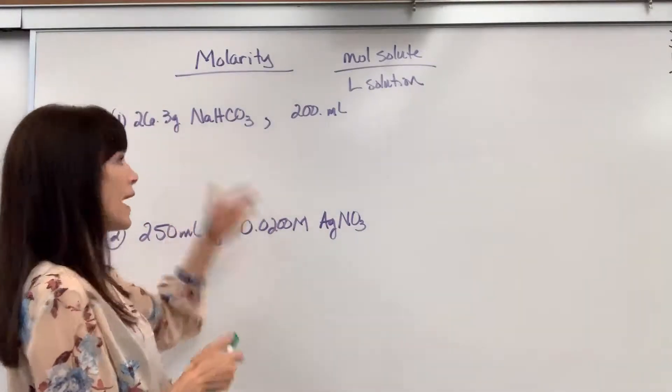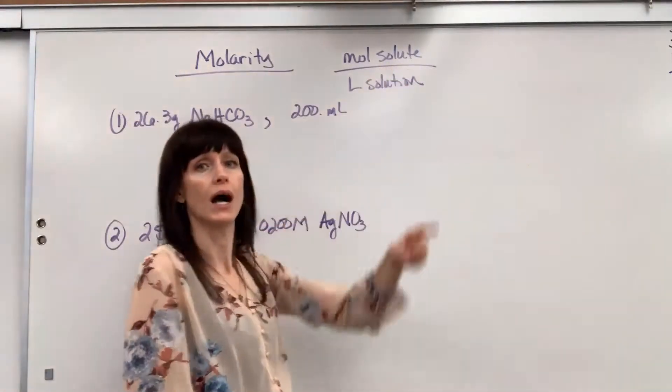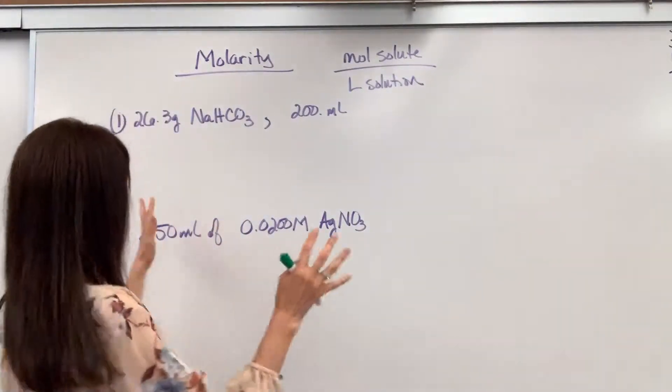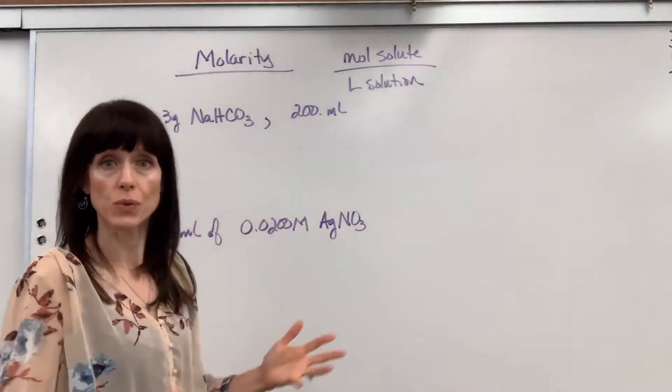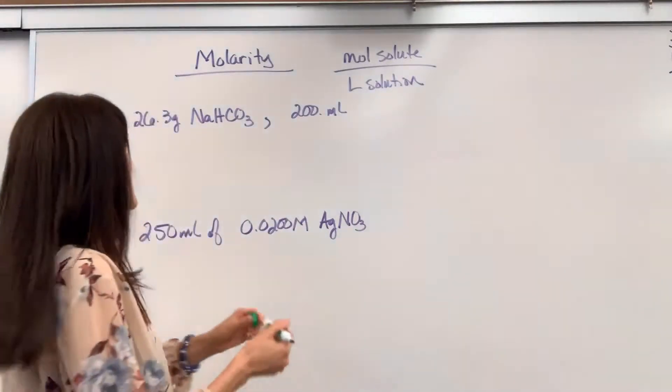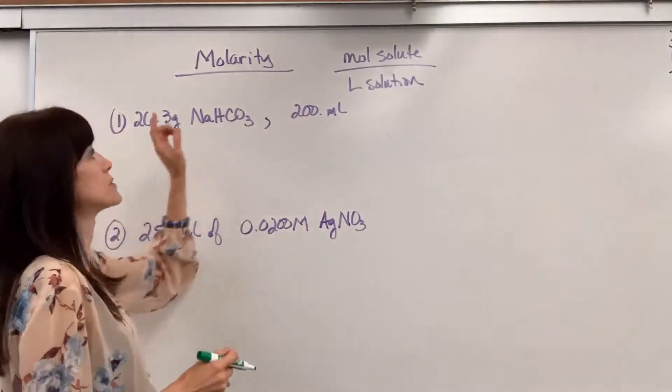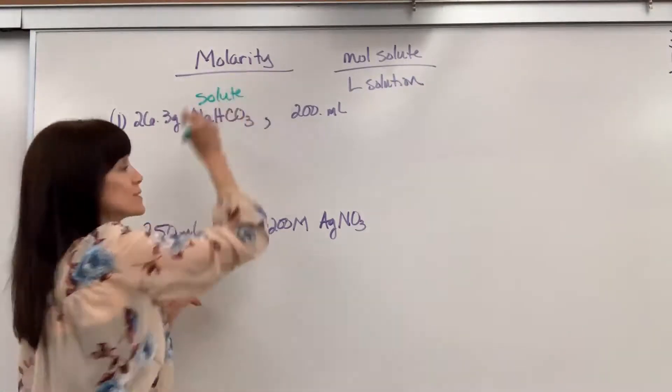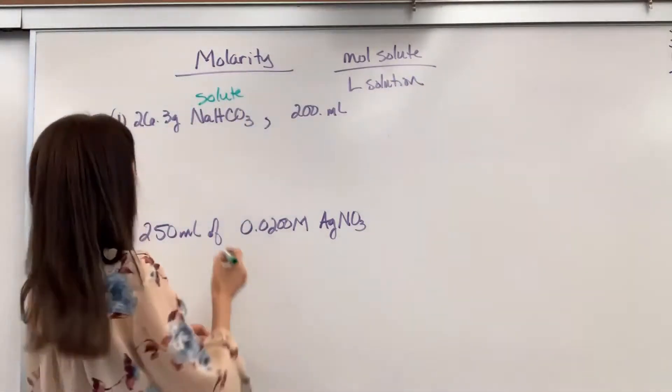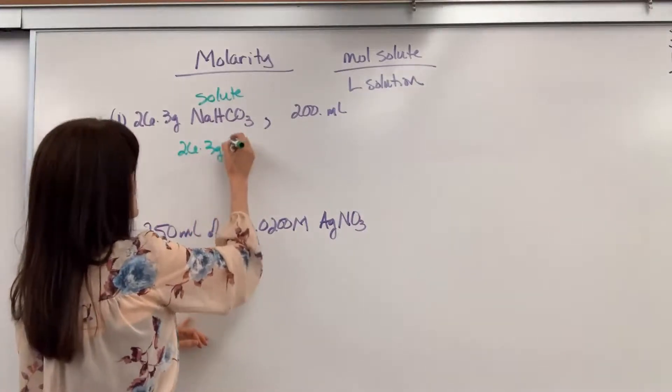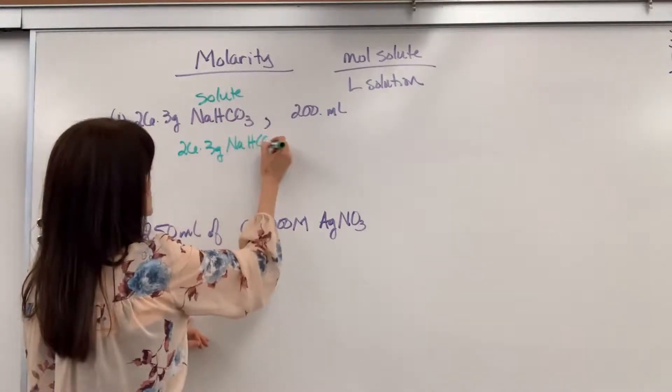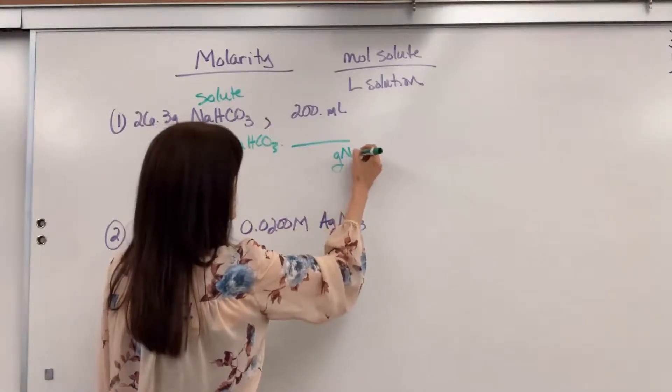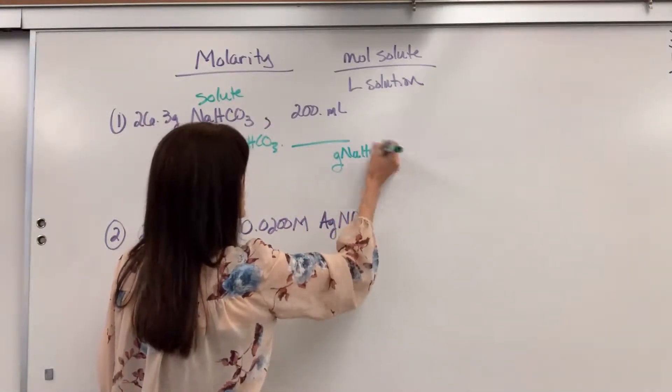Okay, so how can we find the molarity? I go to units. I need moles of solute and liters of solution. Well, I've got grams and mils. We're going to do a couple of conversions. Let's go ahead and convert grams to moles because remember, that's my solute. That's what's going to be dissolved. We've got 26.3 grams of sodium hydrogen carbonate. We've got to go from grams of that sodium hydrogen carbonate to moles.